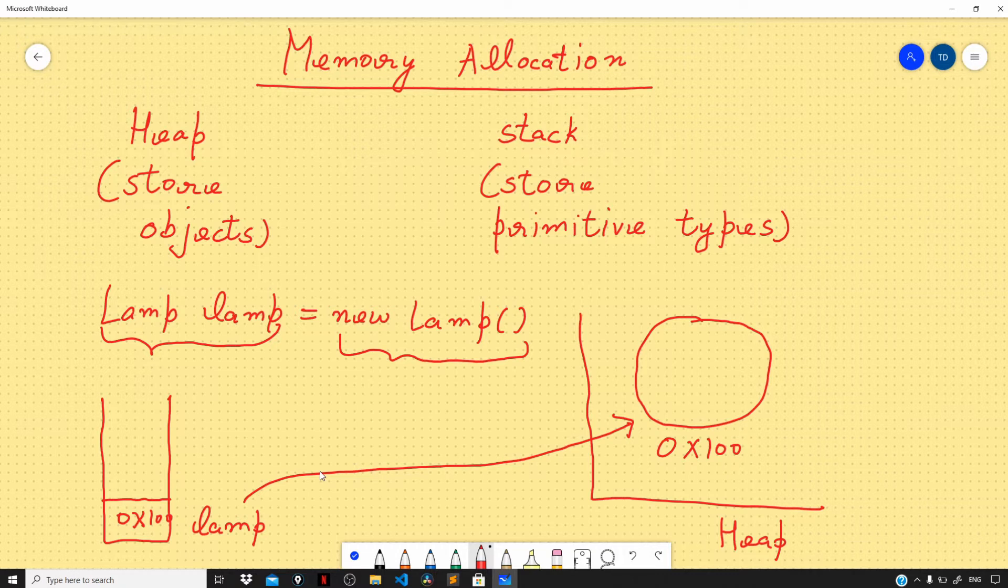Primitives are different. When we declare an integer variable, say 'int a' and set this to 2, that integer is stored on the stack and that value is stored in that memory location.